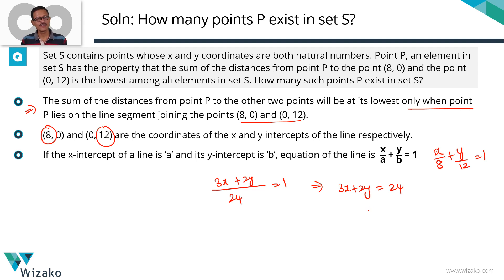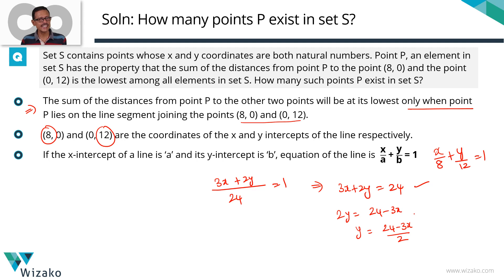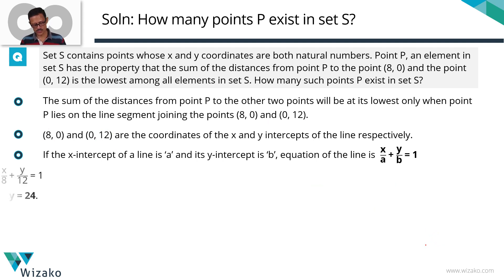Point P lies on this line segment, meaning any value P takes must satisfy 3x + 2y = 24. We need to find values where x and y are both natural numbers. To do this, I'll rewrite the equation in y = mx + c format: 2y = 24 − 3x, so y = (24 − 3x) / 2. This makes it easy to determine how many integer solutions exist.